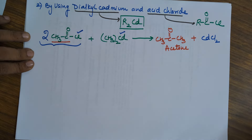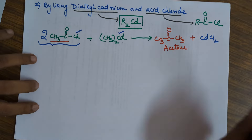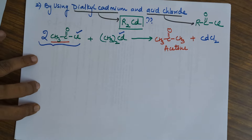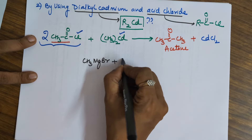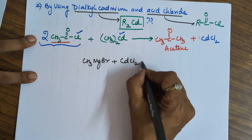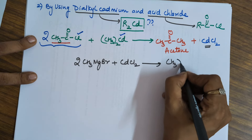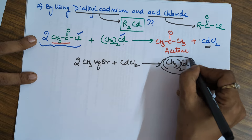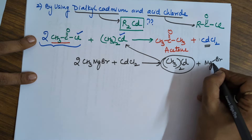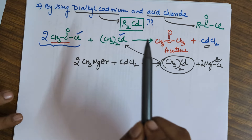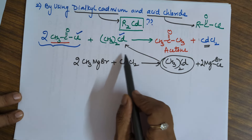This by-product is important. To obtain dialkyl cadmium, we use Grignard reagent — specifically CH3MgBr — and treat it with cadmium chloride. It is this cadmium chloride which can be reused. Two molecules of Grignard reagent treated with cadmium chloride lead to your dimethyl cadmium, which is your requirement in this reaction. The by-product is MgBrCl. So, dialkyl cadmium reacts with acid chloride to give you your ketone, and you can prepare dialkyl cadmium using a Grignard reagent with cadmium chloride.